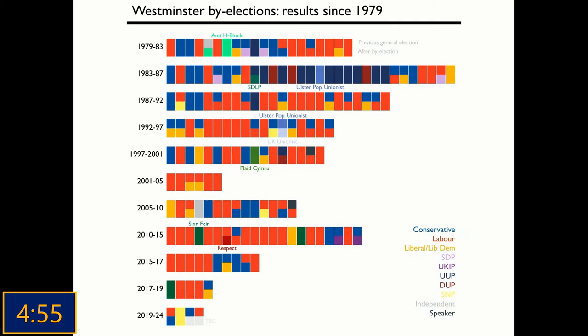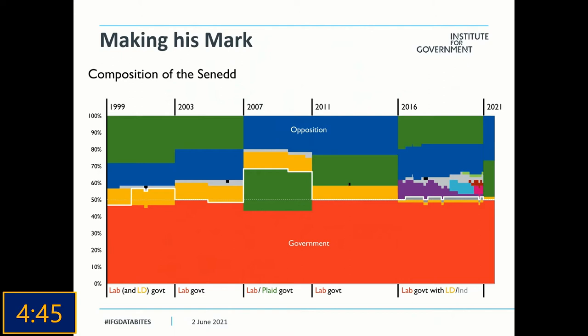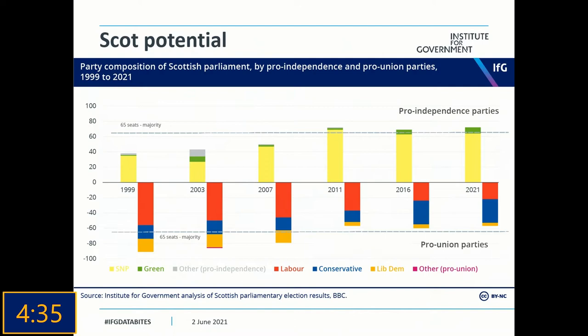Then we have the devolved elections. In Wales, Labour won 30 out of 60 seats to remain in government — they've been there ever since 1999. In Scotland, the SNP's 64 seats fell just short of the 65 needed for a majority, but there is still a majority in favour of independence in the Scottish Parliament. And in England, while the Conservatives made gains in local councils, Labour won the new West Yorkshire mayoralty and gained mayors in the West of England and Cambridgeshire and Peterborough.